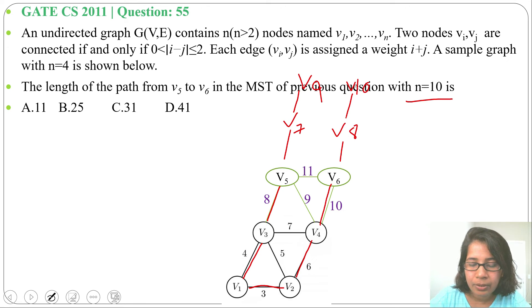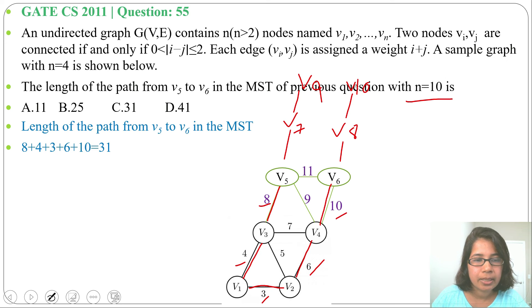Now what is the path cost from v5 to v6? We'll add 8 plus 4 plus 3 plus 6 plus 10. So 8 plus 4 plus 3 plus 6 plus 10 equals 31.